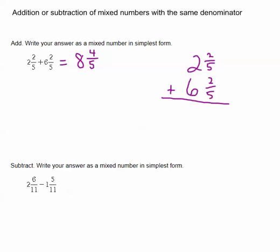You would still approach the problem in a similar fashion. 2 fifths plus 2 fifths is 4 fifths, and then 2 plus 6 for your whole numbers is 8. So we still end up with the same answer, 8 and 4 fifths.